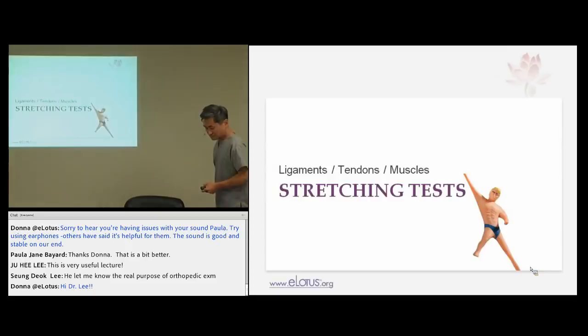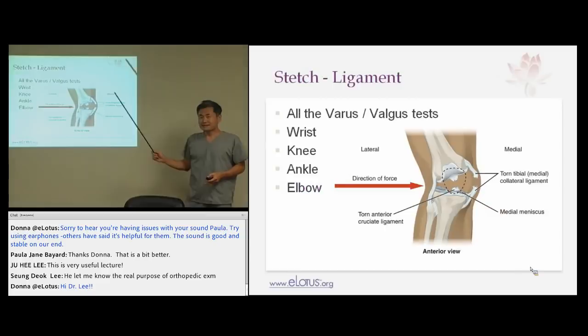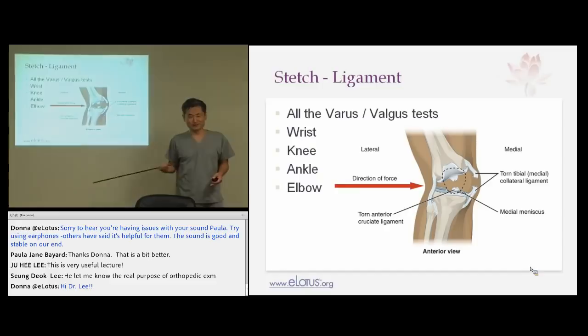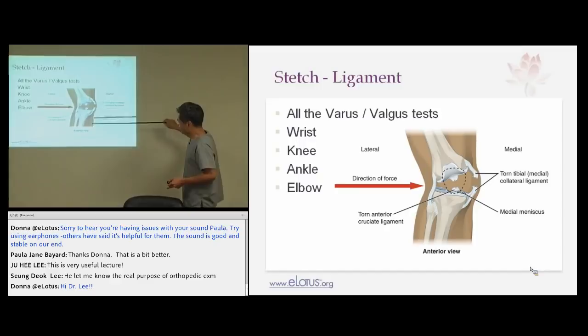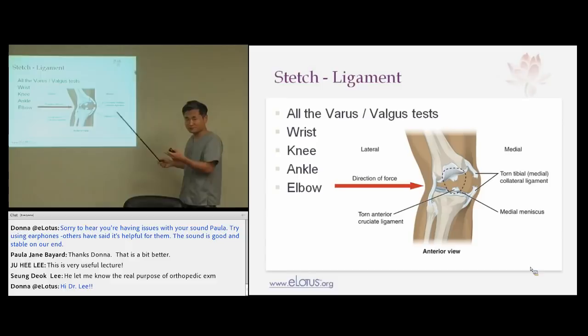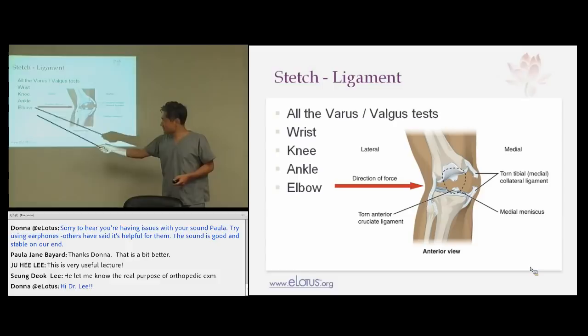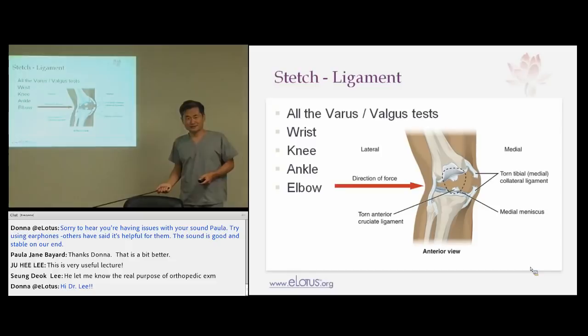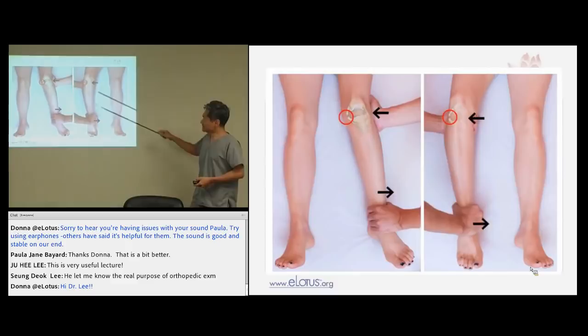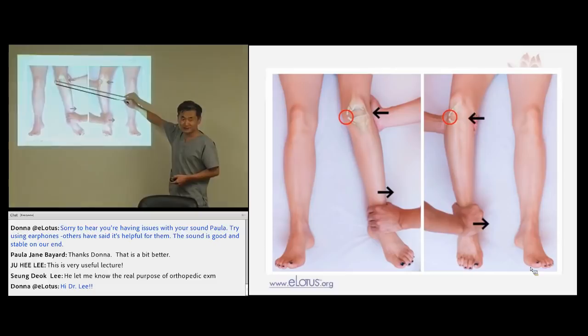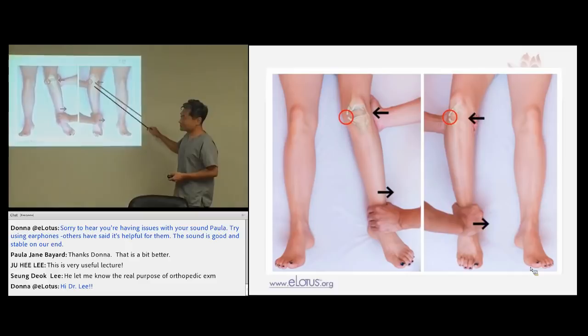All varus/valgus tests fall into the stretching category. With a varus stress — force from inside — the lateral collateral ligament is tested. If there is a force here, this ligament will be cut: that is the mechanism of injury, common with skiing or skating. The varus/valgus stress test gives a force — if the medial ligament is torn, it makes a positive sign. For lateral ligament, varus stress shows the response. This is very intuitive.